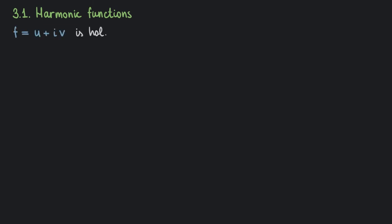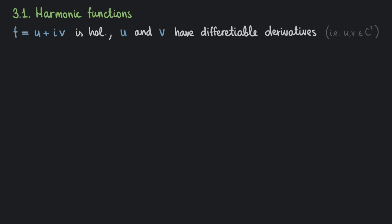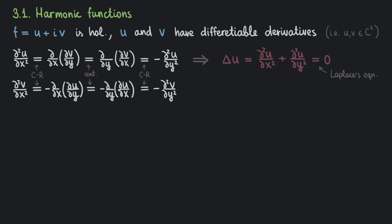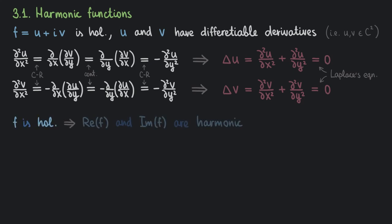Consider again a holomorphic function F = U + iV where U and V are twice differentiable. For the second derivative of U with respect to x: ∂²U/∂x² = ∂/∂x (∂V/∂y). Changing the order of differentiation and using the Cauchy-Riemann equations again yields the Laplacian of U equals zero. Functions satisfying this equation are called harmonic. Using the same reasoning, V is also harmonic. So if F is holomorphic, then its real and imaginary parts are harmonic. Therefore, all theorems on holomorphic functions are also theorems on pairs of harmonic functions.